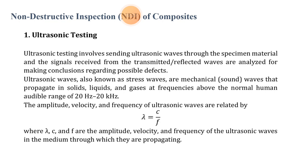The first method is ultrasonic testing. Ultrasonic testing involves sending ultrasonic waves into a specific material and analyzing signals received from transmitted or reflected waves to make conclusions regarding possible defects in composites. Ultrasonic waves, known as stress waves, are mechanical waves that propagate in solids, liquids, and gases at frequencies above the normal human audible range of 20 Hz to 20 kHz. The wavelength, velocity, and frequency of ultrasonic waves are related by: lambda equals C divided by F, where lambda is the wavelength, C is the velocity, and F is the frequency of the ultrasonic waves in the medium through which they are propagating.